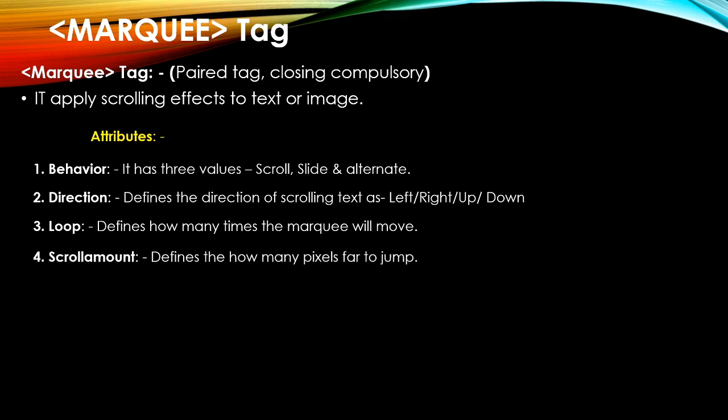The scrollamount attribute defines how many pixels the marquee jumps at a time — that is, the distance between one jump and the next. The value is given in pixels. The default value is 6 pixels, meaning the marquee moves 6 pixels per jump. This attribute is used to control the speed of the marquee.